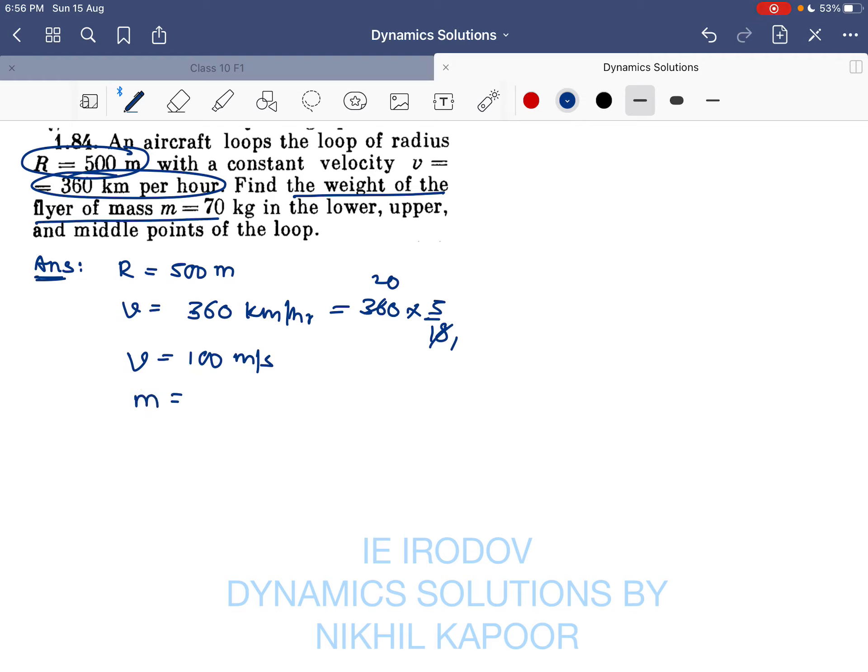We need to find the weight of the flyer whose mass m = 70 kg in the lower, upper, and middle points of the loop.